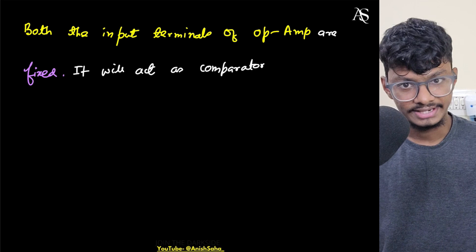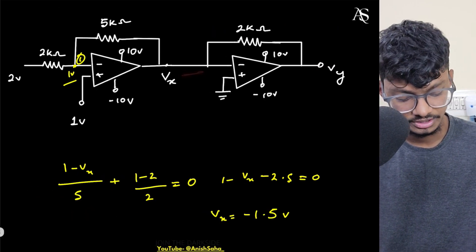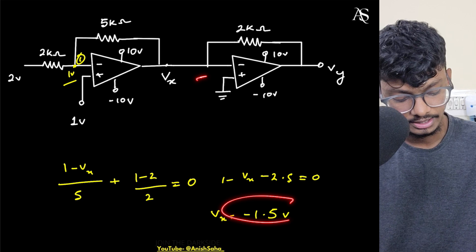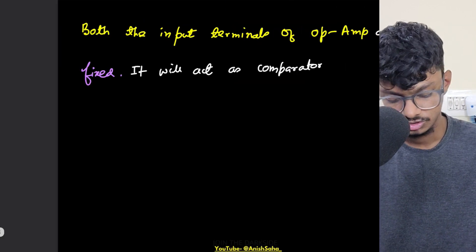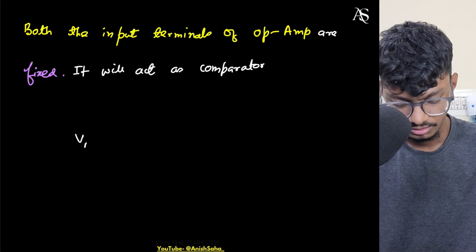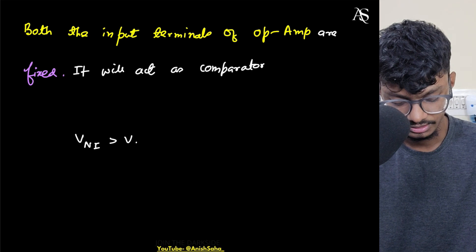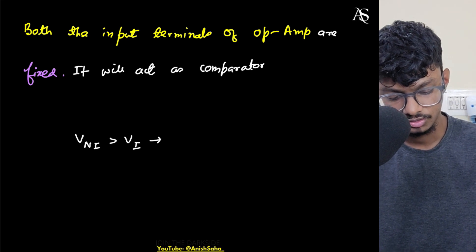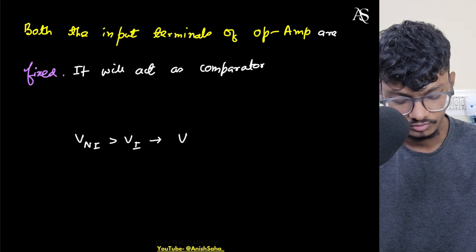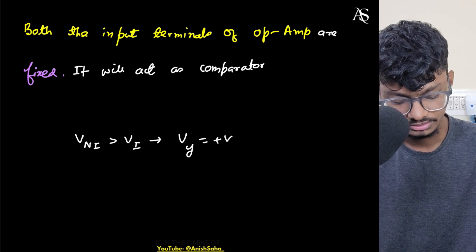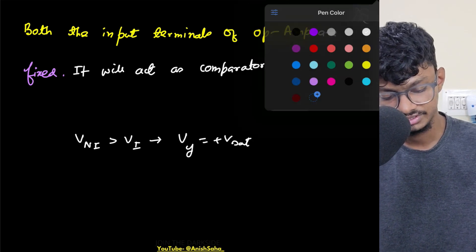So if it acts as a comparator, what will happen is that at this terminal I have potential of what? Minus 1.5 volt and this is zero volts. So I will say V non-inverting is greater than V inverting. Hence, hence it will, Vy will be plus Vsat. And what is Vsat? Vsat is 10 volts. So it will be plus 10 volts.